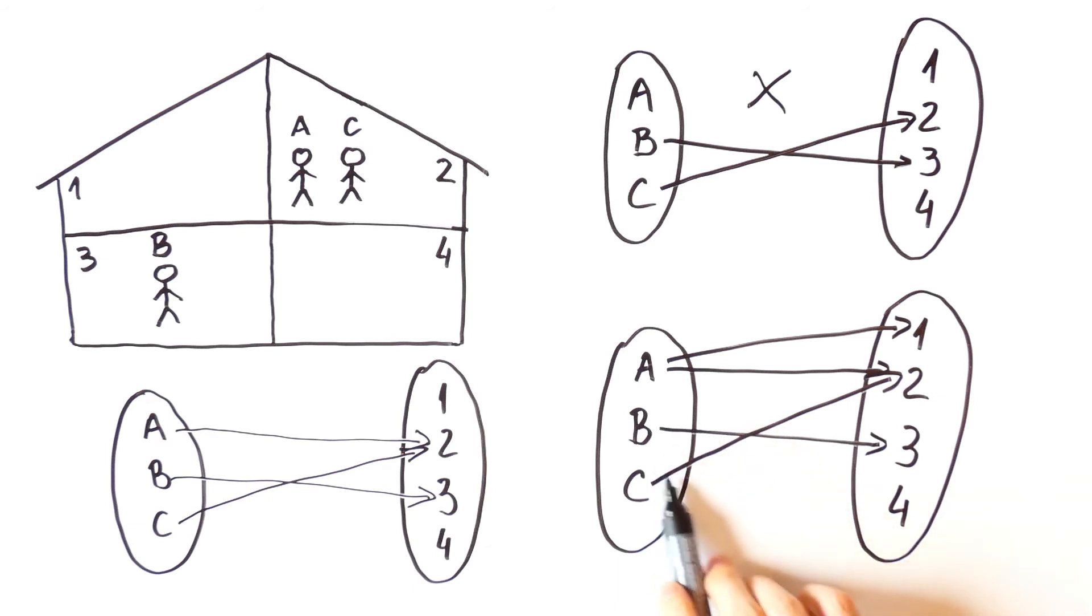This is also not a function. Because it would mean that person A is both in room 1 and in room 2.